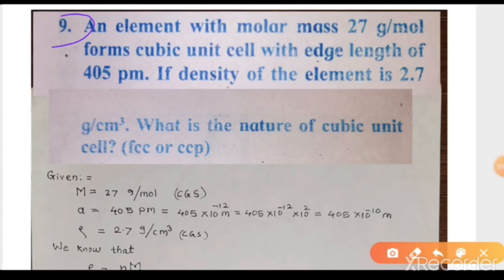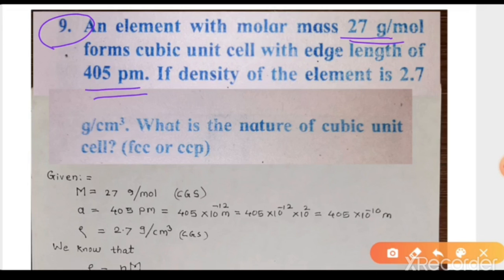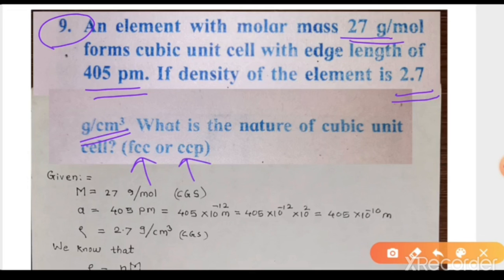Next numerical, number 9: An element with molar mass 27 g/mol forms a cubic unit cell with edge length 405 pm. If the density of the element is 2.7 g/cm³, what is the nature of the cubic unit cell?